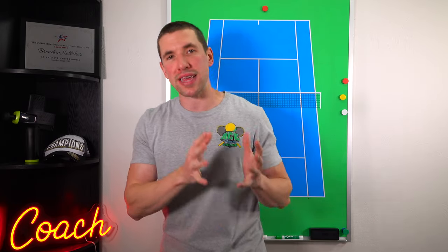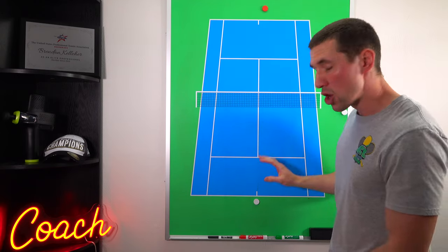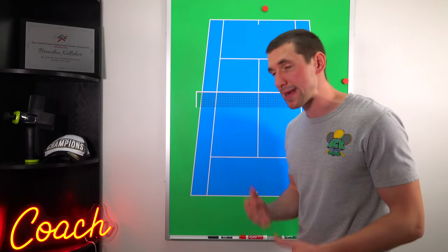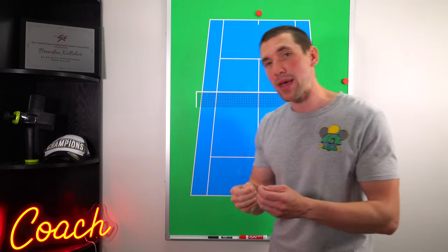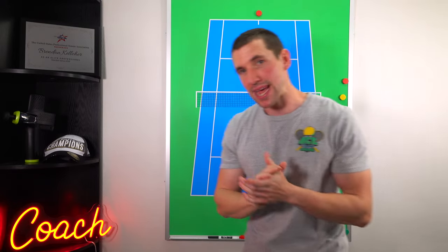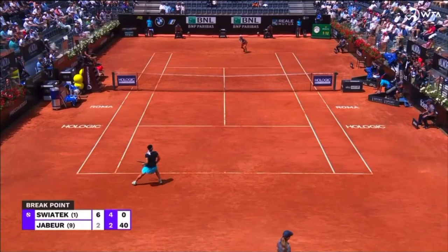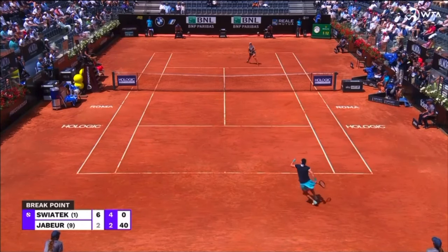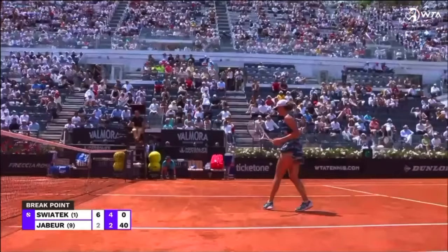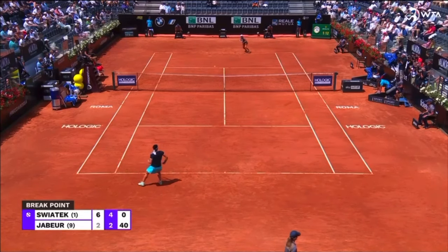The last point is the ability to execute her game plan a little bit better. We talked about what Jabeur wants to do — she wants to use the variety, she wants to use the drop shot to her advantage. Swiatek wants to stay close to the baseline and be able to attack and move forward if she can. Here we have a great example of Swiatek executing her game plan, being able to be aggressive with those big groundstrokes and moving forward. Let's take a look at her positioning and the ability to move forward.